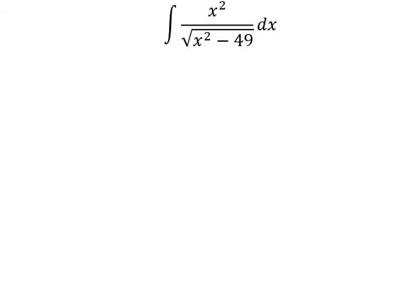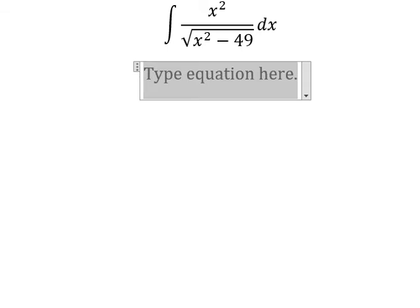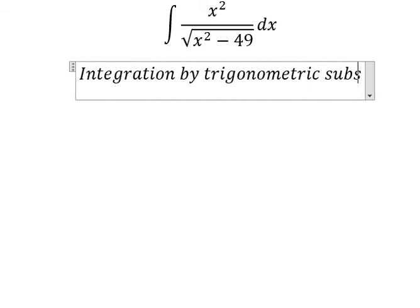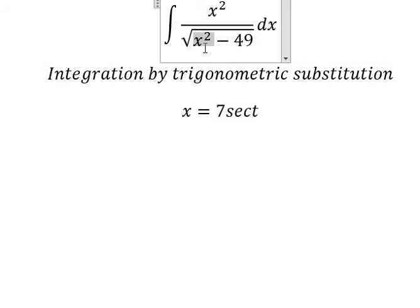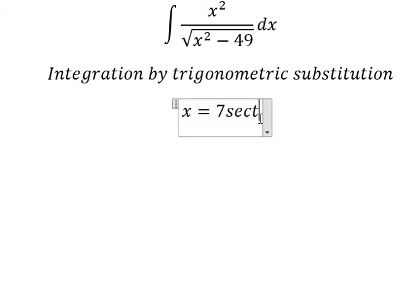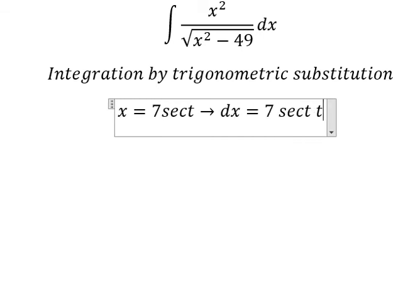Hello everybody, so today I will talk about calculus. The topic today is about integration, and I will show you how to answer using integration by trigonometric substitution. I will put s equals to 7·sec(t). The reason we need this is because if we substitute, we get 49·sec²(t) minus 49, and we can factorize to get sec²(t) minus 1, which we change to tan²(t). The square root of tan²(t) gives tan(t). For ds, we take the first derivative of both sides and get ds equals 7·sec(t)·tan(t)·dt.